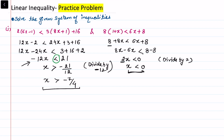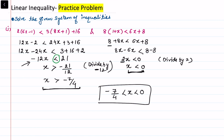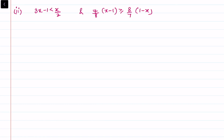Now combining both results: one side says x is less than 0 and the other says x is greater than minus 7 by 4. So we can write minus 7 by 4 is less than x is less than 0. This is the solution for x in this system.